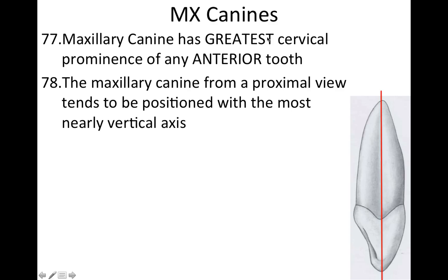The maxillary canine has the greatest cervical prominence of any anterior tooth — notice I put 'anterior' here. You have to pay very close attention when taking the test, because they love to trick you by asking about either anterior or posterior teeth, hoping you'll assume they mean all teeth. The maxillary canine, when viewed from a proximal orientation — mesial or distal — tends to be positioned with the most nearly vertical axis.